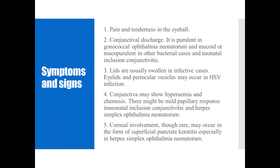What are the signs and symptoms? There is pain and tenderness in the eyeball. Conjunctival discharge is purulent in gonococcal ophthalmia neonatorum, and mucoid or mucopurulent in other bacterial cases and neonatal inclusion conjunctivitis. Eyelids are usually swollen in infective cases. Eyelid and periocular vesicles may occur in HSV infection. There is conjunctival mesial hyperemia and chemosis — chemosis basically refers to edema. There may be mild papillary response in neonatal inclusion conjunctivitis and herpes simplex ophthalmia neonatorum.